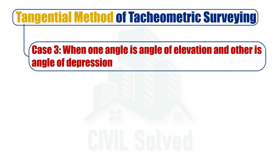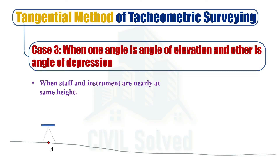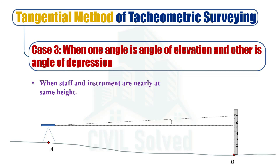Then we have the third and last case, which is when one angle is an angle of elevation and the other is an angle of depression. This is the case when the staff and instrument are nearly at the same height — meaning nearly flat ground. The instrument is placed at one point and the staff at another, where theta one is the angle of elevation and theta two is the angle of depression. The stadia intercept and basics of trigonometry are then used to calculate the distances. This is all from the tangential method of tacheometric surveying. Thank you for watching.